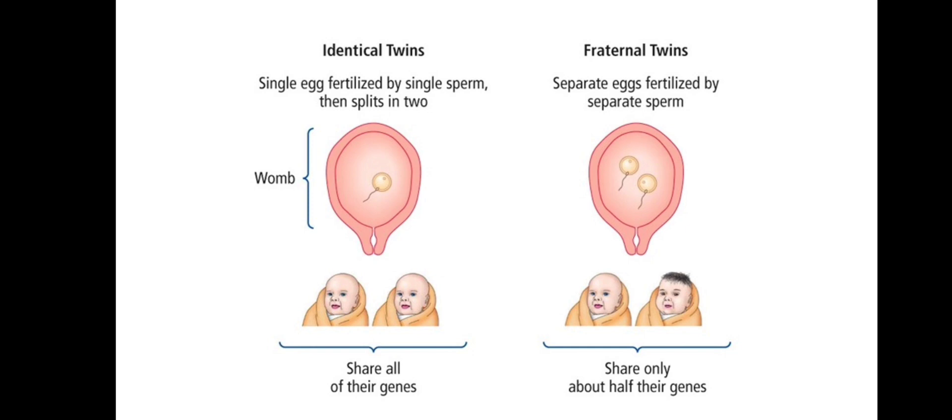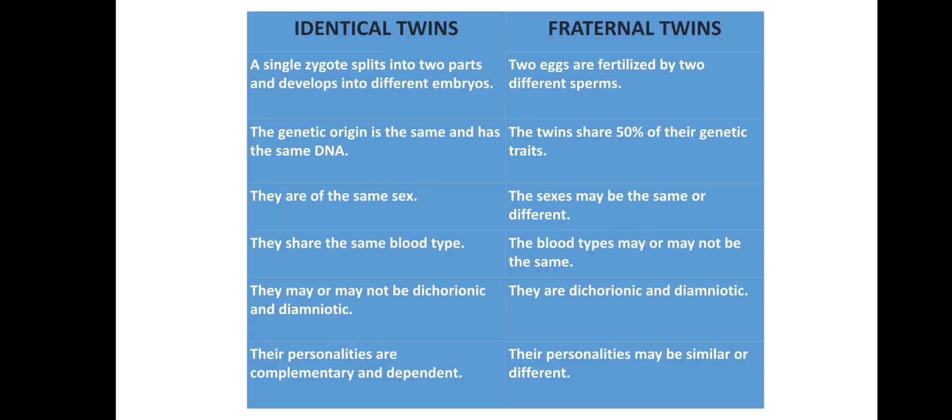Fraternal twins are the opposite. They come from two separate eggs, and each egg is fertilized by a different sperm. So they share only half of their genes — about 50%. They are essentially like normal siblings.